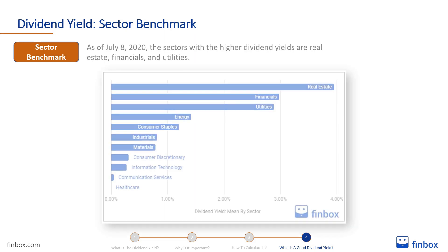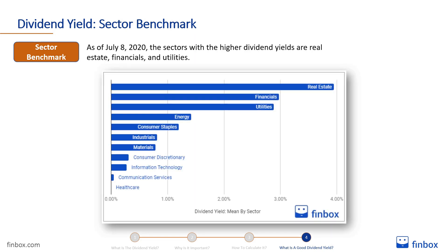As of July 8, 2020, the sectors with the higher dividend yields are real estate, financials, and utilities. The average dividend yield is low in many sectors, since companies have cut or suspended their dividend to preserve cash and survive the coronavirus crisis.